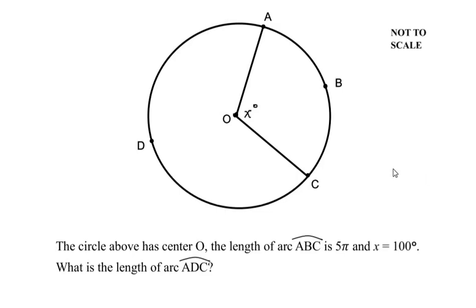Hello and welcome to my channel. In this video we are going to solve an example on mensuration. The circle above has center at point O. The length of arc ABC is given as 5π, and x is given as 100 degrees. What is the length of arc ADC?